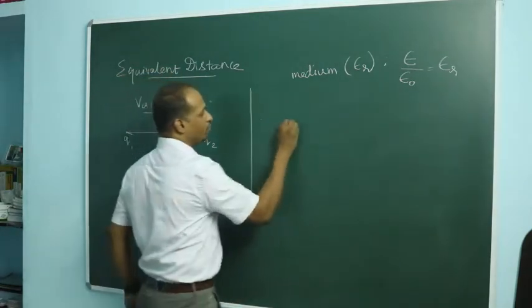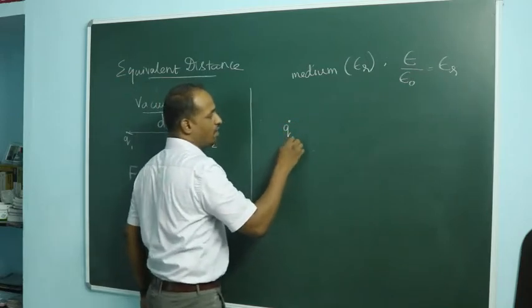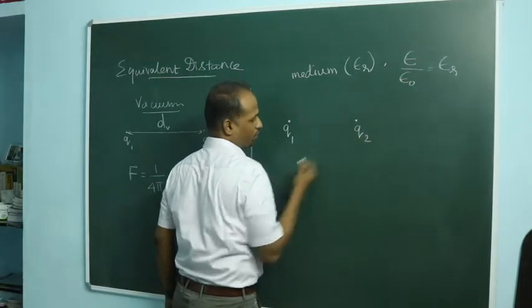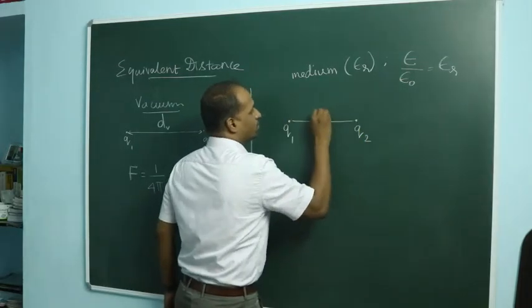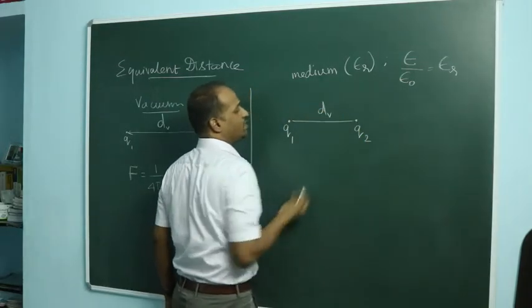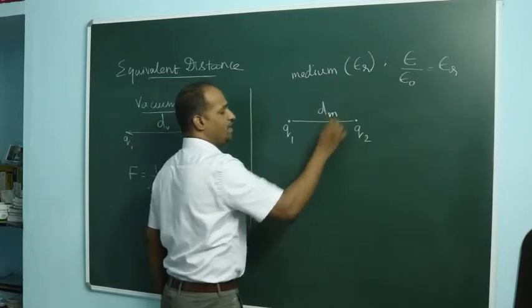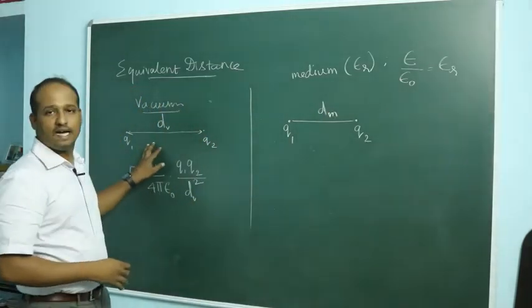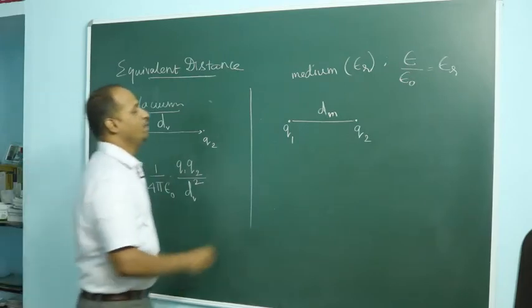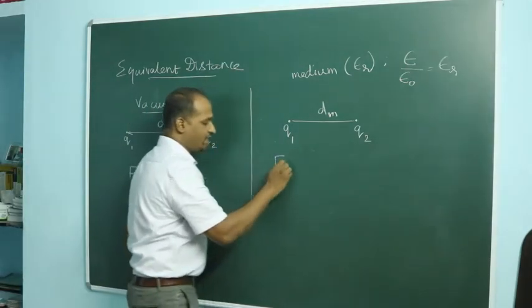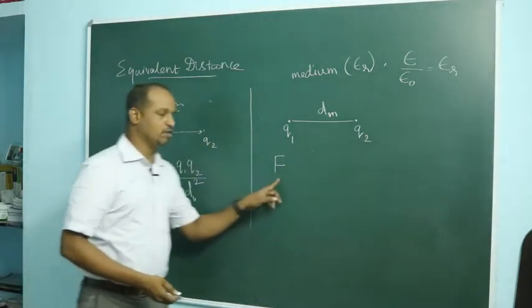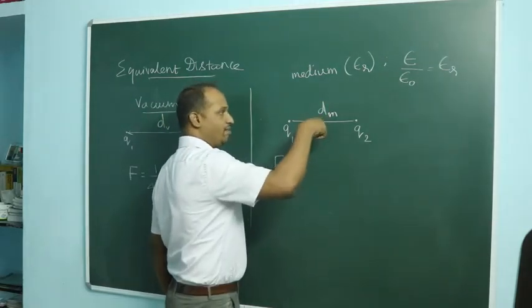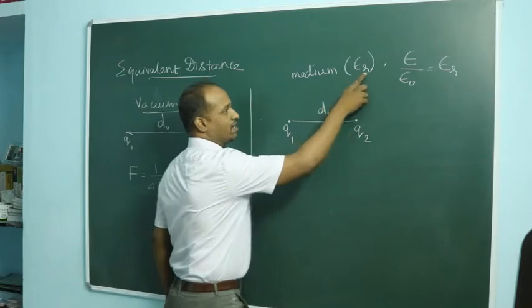We keep q1 fixed and move q2 around. At some distance D_medium from q1, the charges begin to experience the same force as they experienced in vacuum. Since they experience the same force, here also F equals the same F. But now these two charges are in a medium of dielectric constant epsilon r.